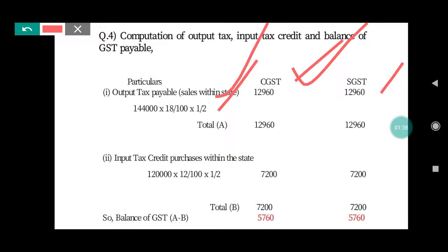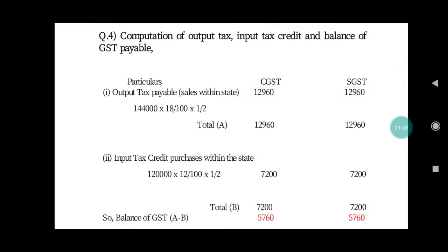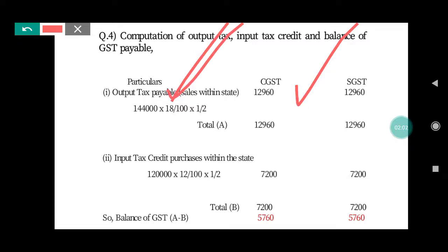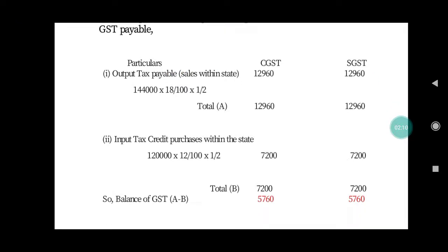In simple terms: 18% is split as 9% CGST and 9% SGST. So 1,44,000 × 9% = 12,960 for CGST, and 1,44,000 × 9% = 12,960 for SGST. Similarly, we now calculate the input tax credit.